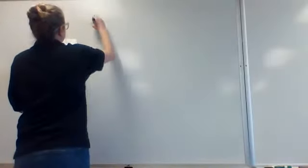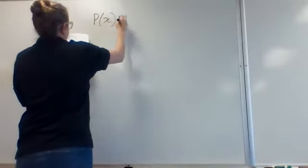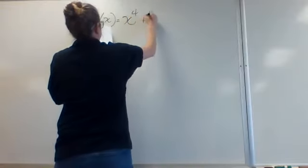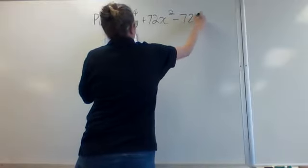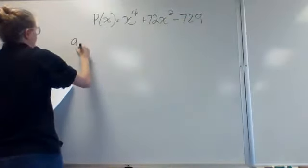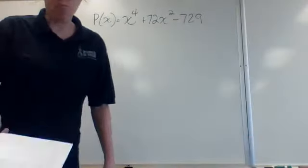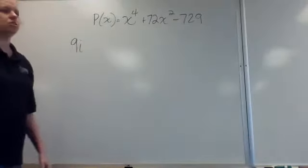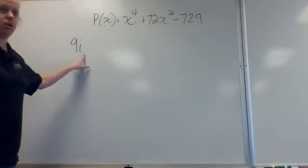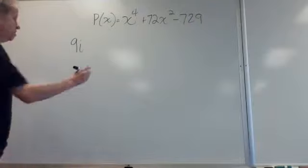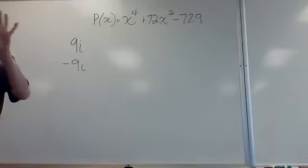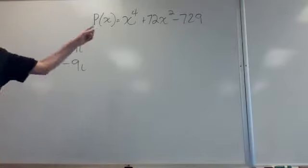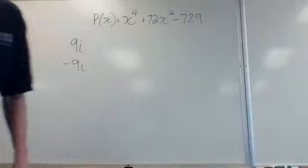Looking at number 13: P of x equals x to the 4th plus 72x squared minus 729. It tells me that 9i is a zero, and wants me to find the other zeros. First of all, if 9i is a zero, what is automatically also a zero? Negative 9i — because those zeros come in pairs.